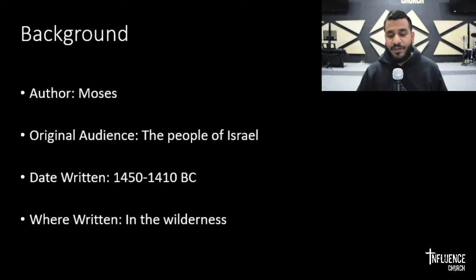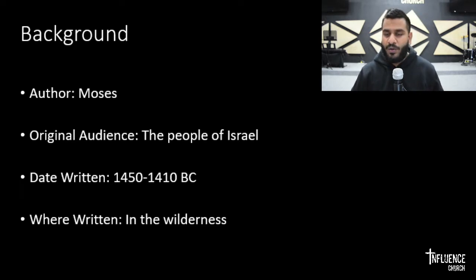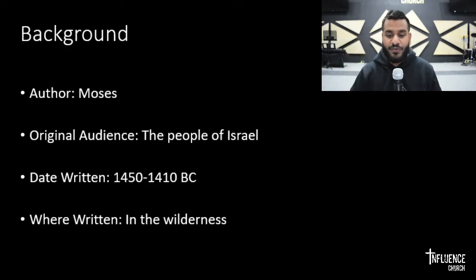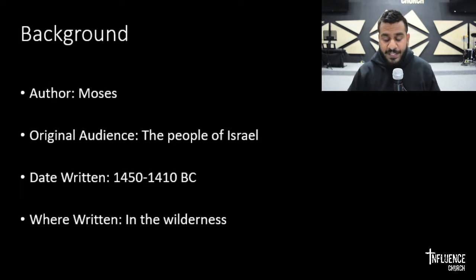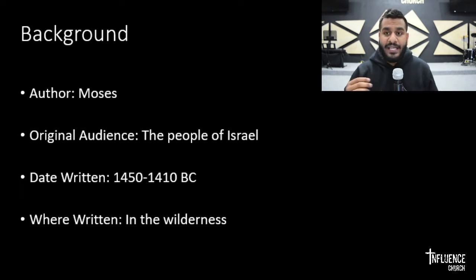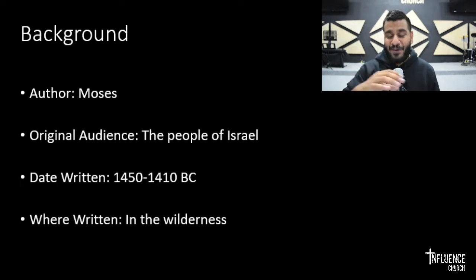Who wrote the book of Exodus? Moses, because Moses is the author of the Torah, also known as the Septuagint, which is the first five books of the Bible: Genesis, Exodus, Leviticus, Numbers, and Deuteronomy. The author of this book is Moses. The audience to whom he writes is the people of Israel. The approximated date the book of Exodus is believed to be written is around 1450 to 1410 BC, written in the wilderness where the children of Israel were wandering on their way to the land of Canaan.